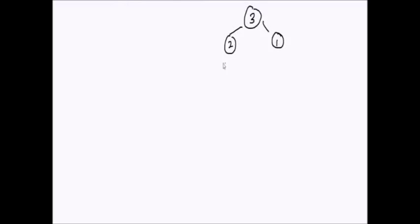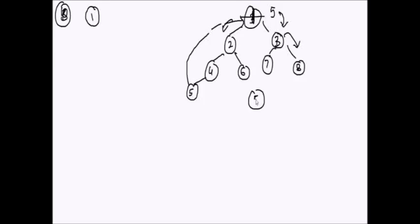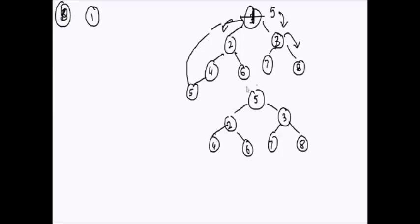Now let's understand how to delete an element from a heap. Deletion is simple: we remove the root element and swap the last element of the heap onto the root position, decrementing the heap size. Then we push the new root down until it reaches its correct position — this is the shift-down operation.